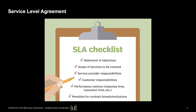Service level agreements are also defined at different levels. There is the customer-based SLA, which is an agreement with an individual customer group covering all the services they use. Or a service-based SLA, which is an agreement for all customers using the services being delivered by the service provider. And finally, a corporate-level SLA covering all the generic service level management issues appropriate to every customer throughout the organization. These service level management items are often abbreviated as SLM. The issues are likely to be less volatile, and so updates or SLA reviews are less frequently required.